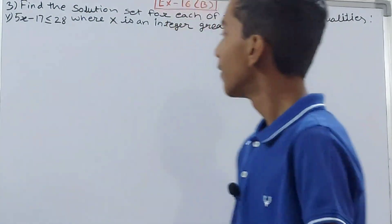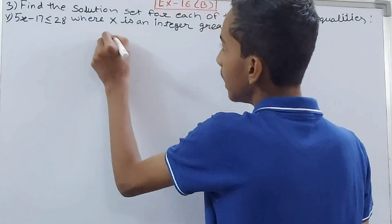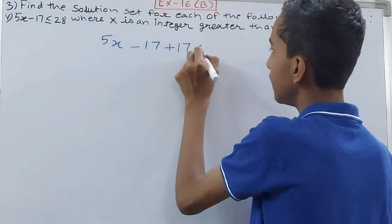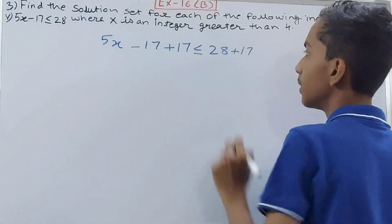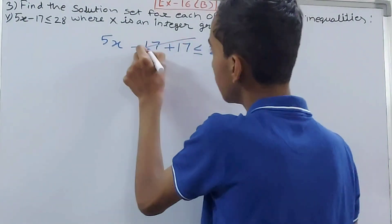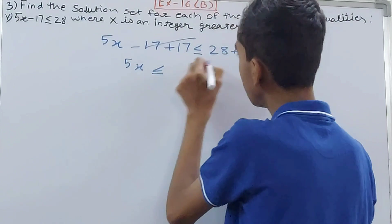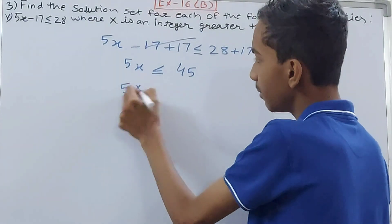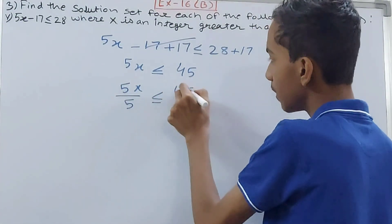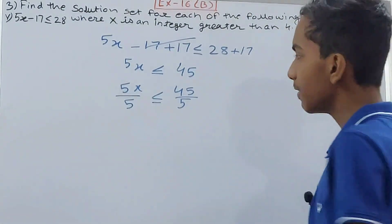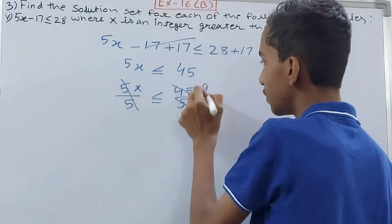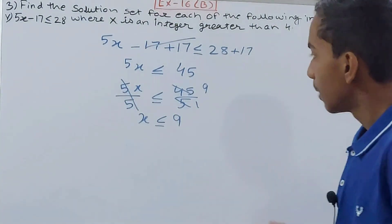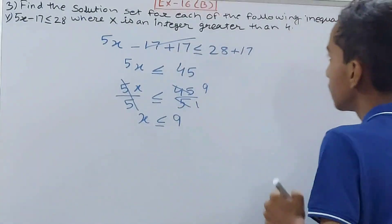Next, we have 5x minus 17 ≤ 28. Adding 17 to both sides: plus 17 and minus 17 cancel on the left, giving 5x ≤ 28 plus 17, which is 45. Dividing both sides by 5: 5 and 5 cancel, and 45 divided by 5 is 9. So x is less than or equal to 9.